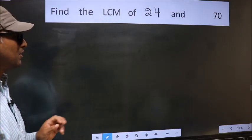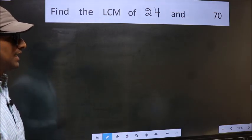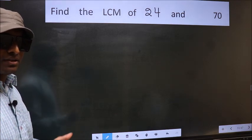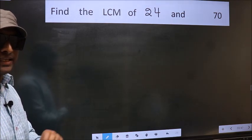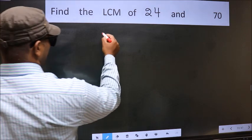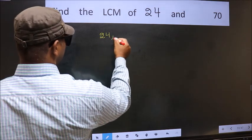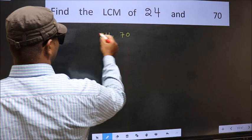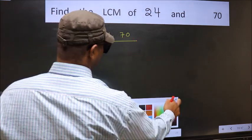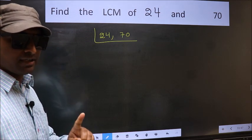Find the LCM of 24 and 70. To find the LCM, first we should frame it in this way: 24, 70. This is your step 1.